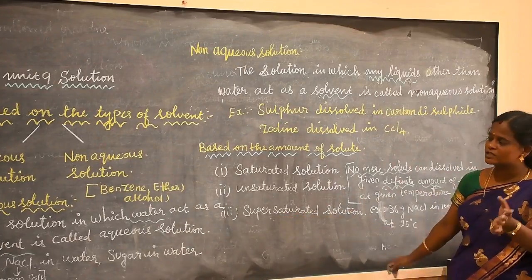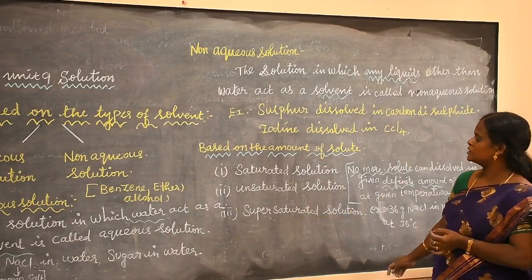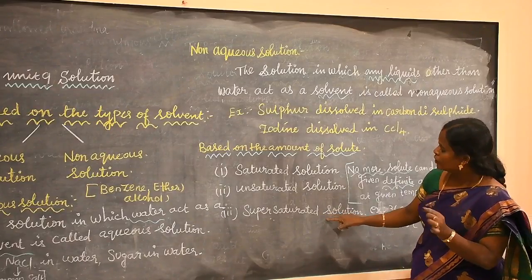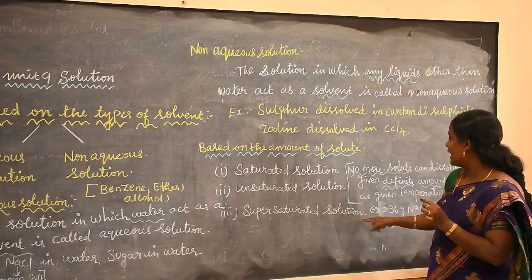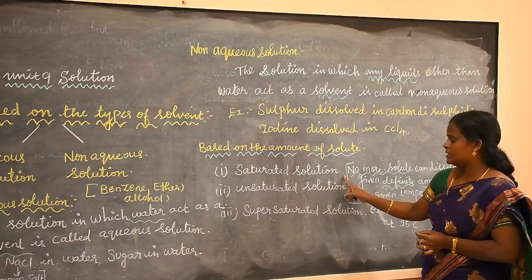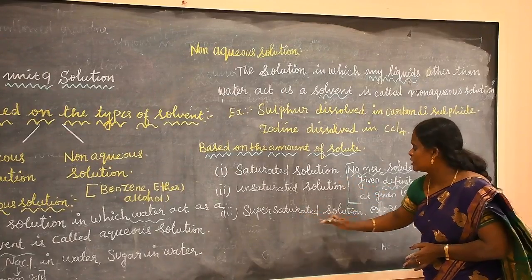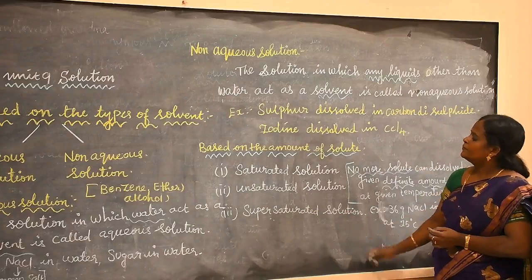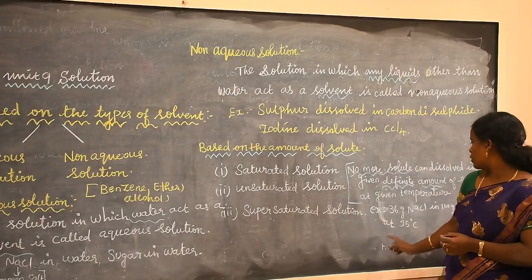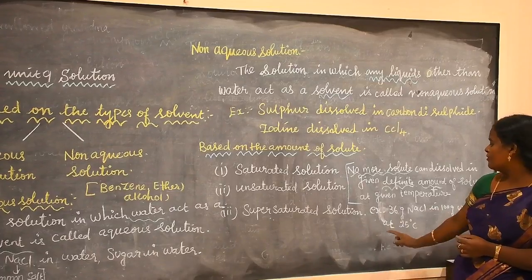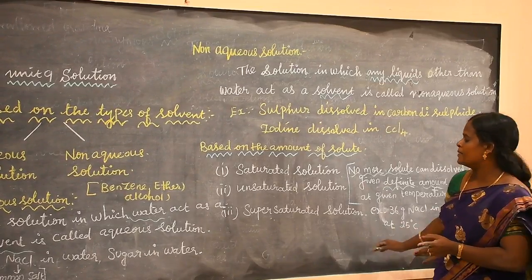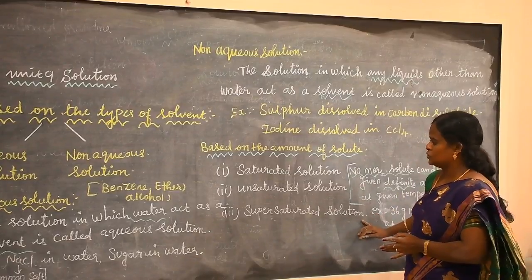Let us see supersaturated solutions. What is meant by supersaturated solution? More solute can be dissolved beyond the saturated level to form a supersaturated solution. For example, 40 grams of sodium chloride dissolved in 100 grams of water at 25 degrees centigrade forms a supersaturated solution.